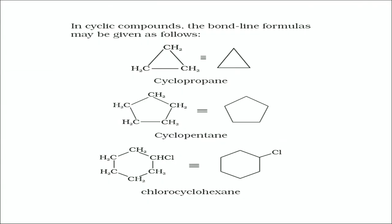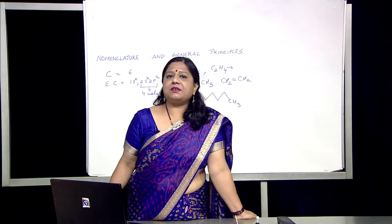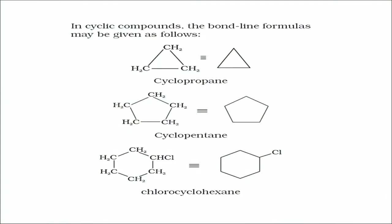In cyclic compounds, you can see they are represented only by bond lines — cyclopropane, cyclohexane, cyclopentane, chlorocyclohexane, etc. They are only represented by lines. If you open those lines, you can see that carbon atoms are at the peaks and the rest of the valencies are satisfied by hydrogen.